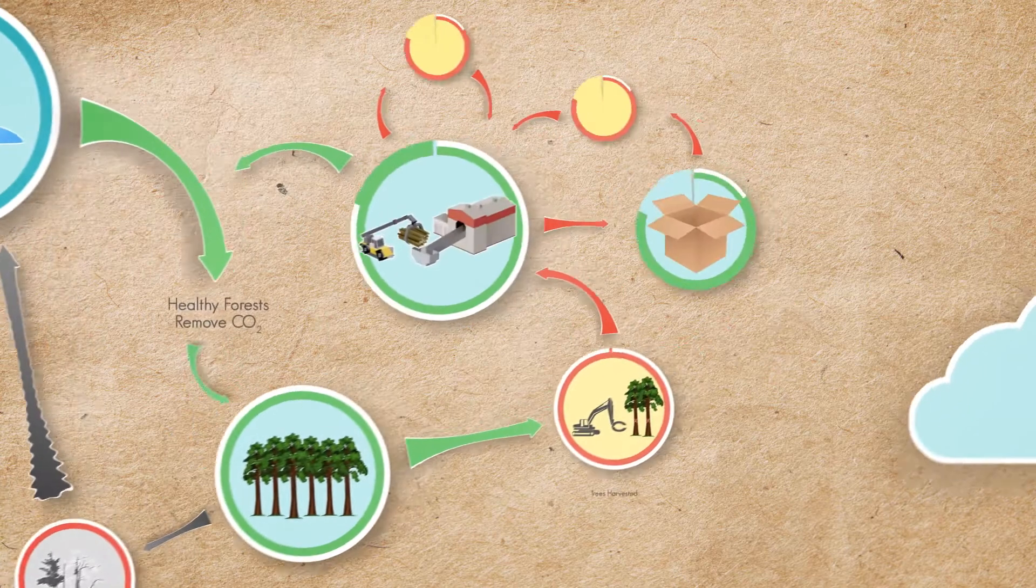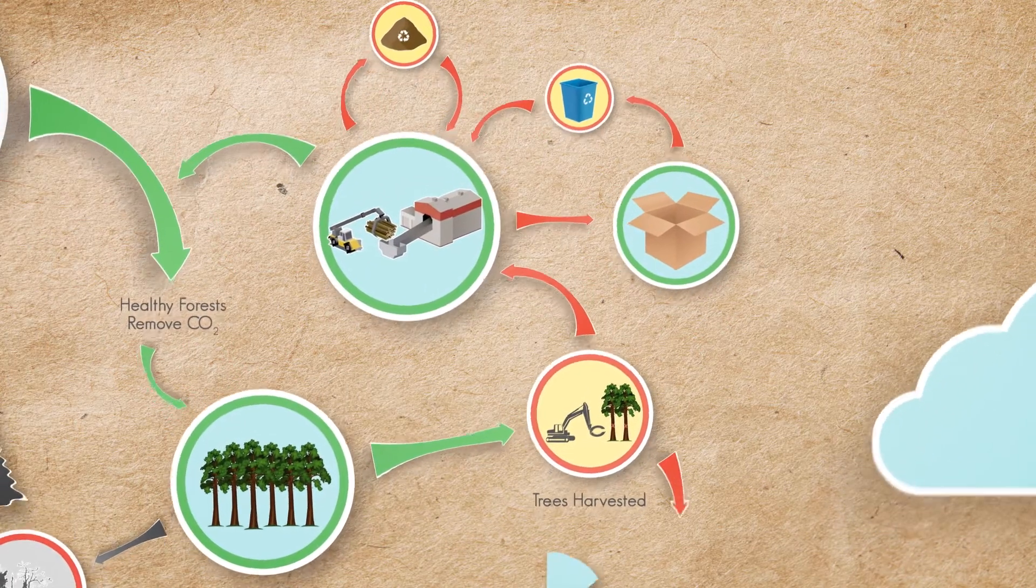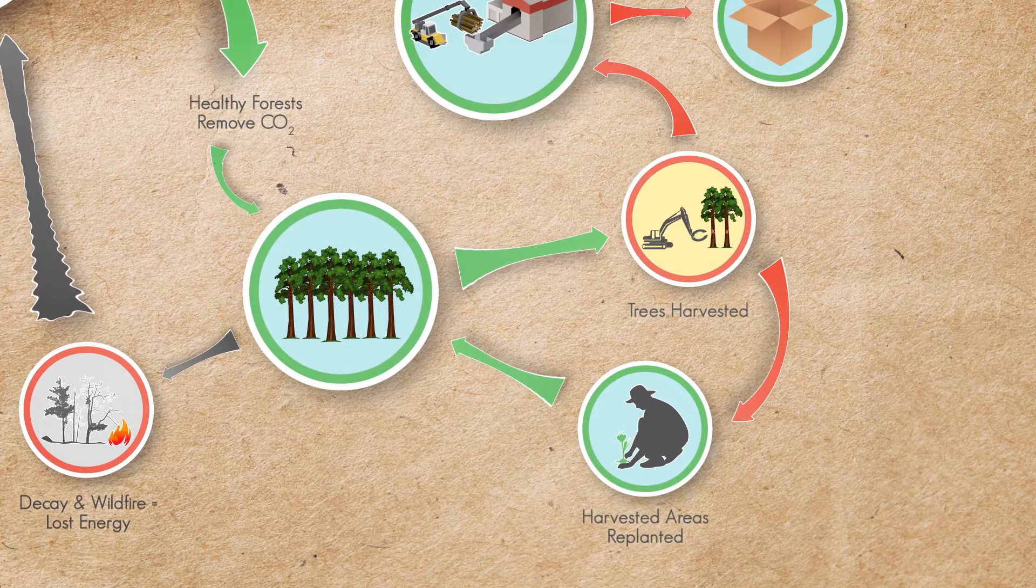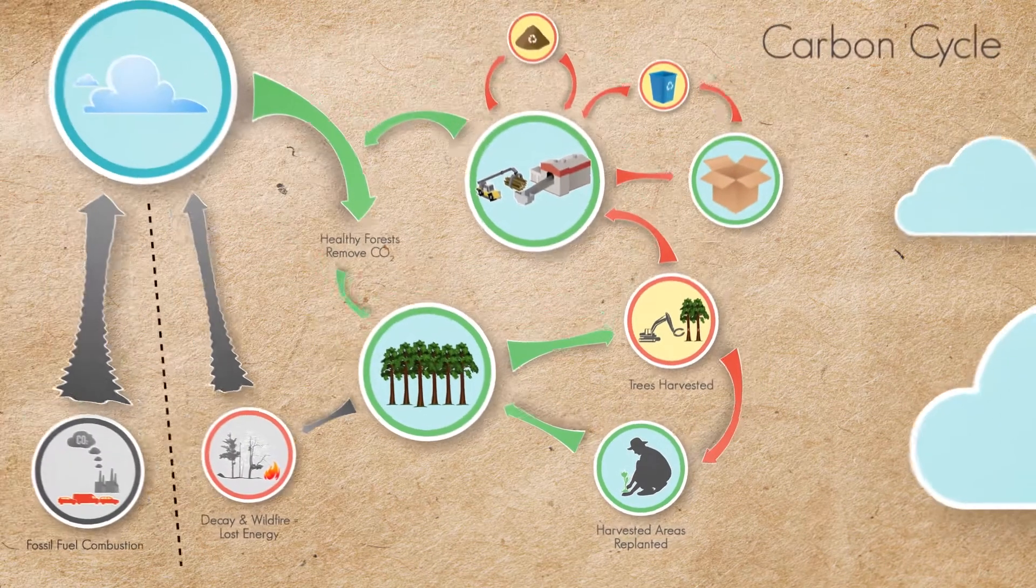Trees are harvested from manufacturers to make paper and wood products. Those trees are replaced with new trees that continue to absorb CO2.